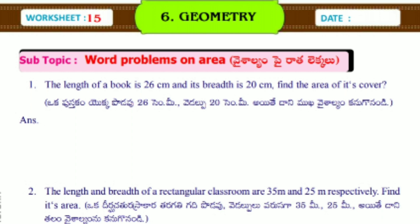Subtopic: Word Problems on Area. First one, the length of a book is 26 cm and its breadth is 20 cm. Find the area of its cover.